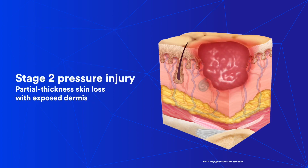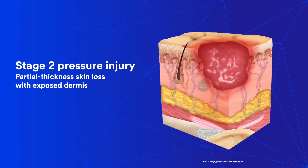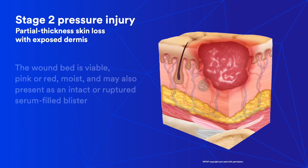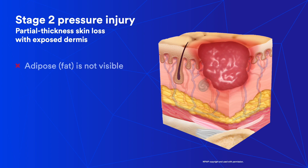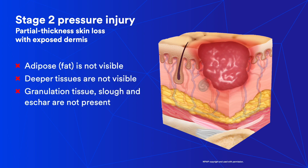The cross-section shows a red wound from the skin down to the dermis. Stage 2 pressure injuries are partial thickness loss of skin with exposed dermis. The wound bed is pink or red, moist, and may also present as an intact skin or ruptured serum-filled blister. Adipose and deeper tissues are not visible, and there is no presence of granulation tissue, slough, or eschar. Stage 2 pressure injuries commonly result from the adverse microclimate and shear in the skin over the pelvis or heels.